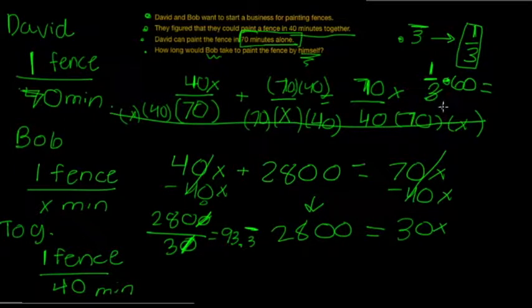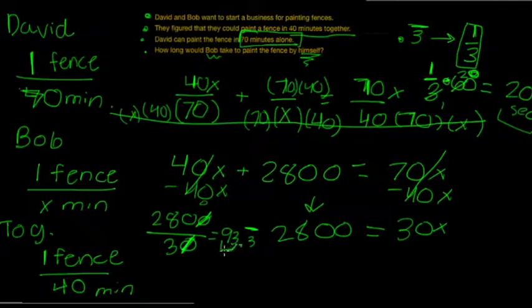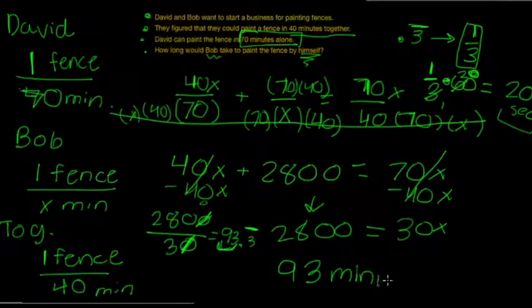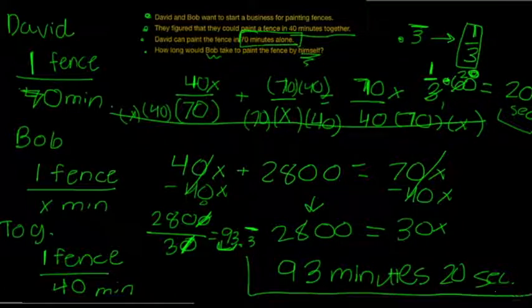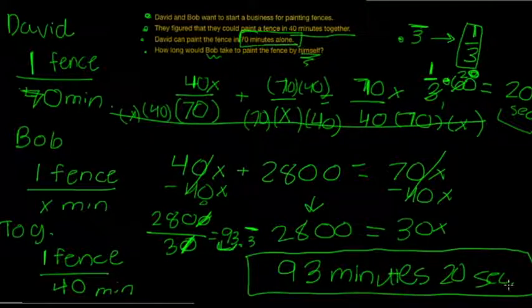If we divide this out, we figure out that's 20 seconds. But that's not it. We also need to include this 93 right here. So, in the end, our answer is 93 minutes and 20 seconds. That's how long it took for Bob to paint the fence by himself. Thank you.